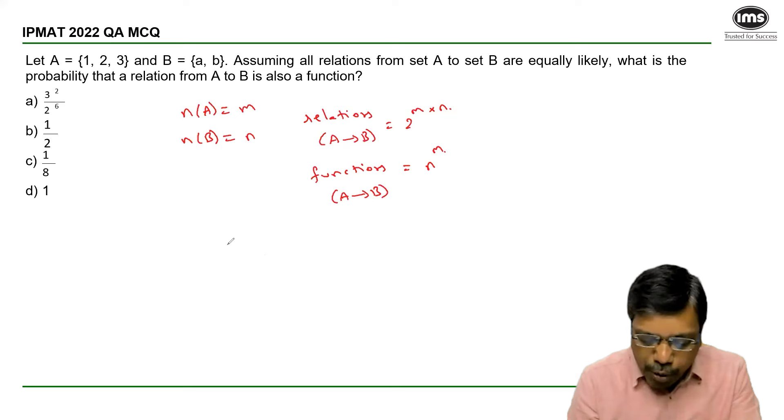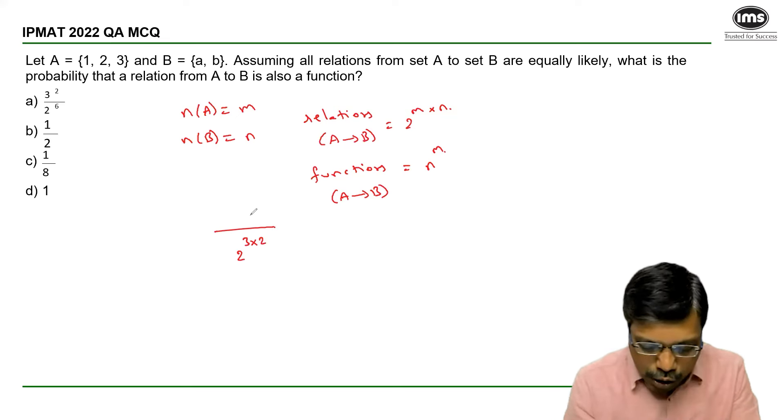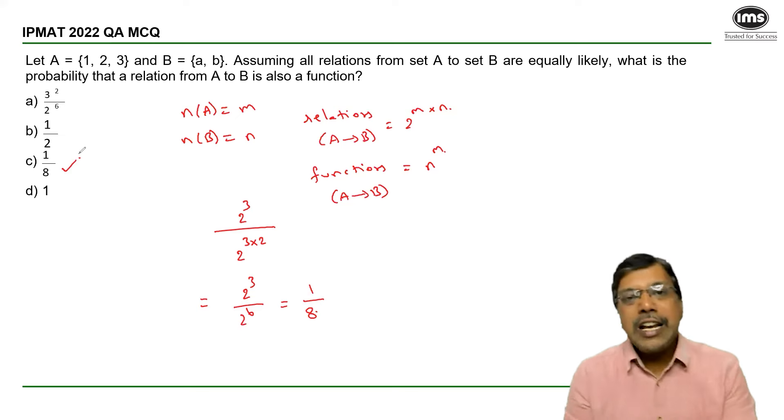So the total number of relations here would be 2 power 3 into 2. Out of these, the number of relations that become functions is 2 power 3. Now 2 power 3 into 2 is 6. So 2 power 3 by 2 power 6 which is 1 by 8. Answer option C.